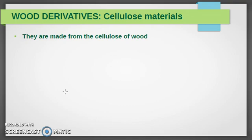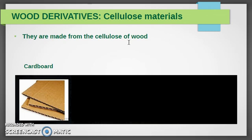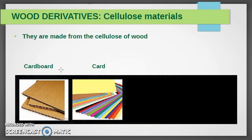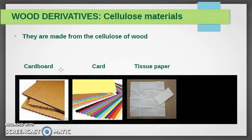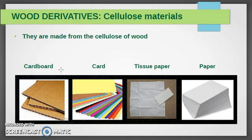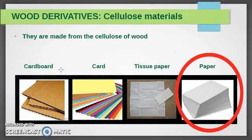The main property of cellulose materials is that they are made from the cellulose of wood. In our daily life, there are many things made of this type of materials. Do you recognize, for example, the cardboard? El cartón, card, cartulina, tissue paper, papel de seda, and paper. What is the main material in this group? Obviously, the paper.